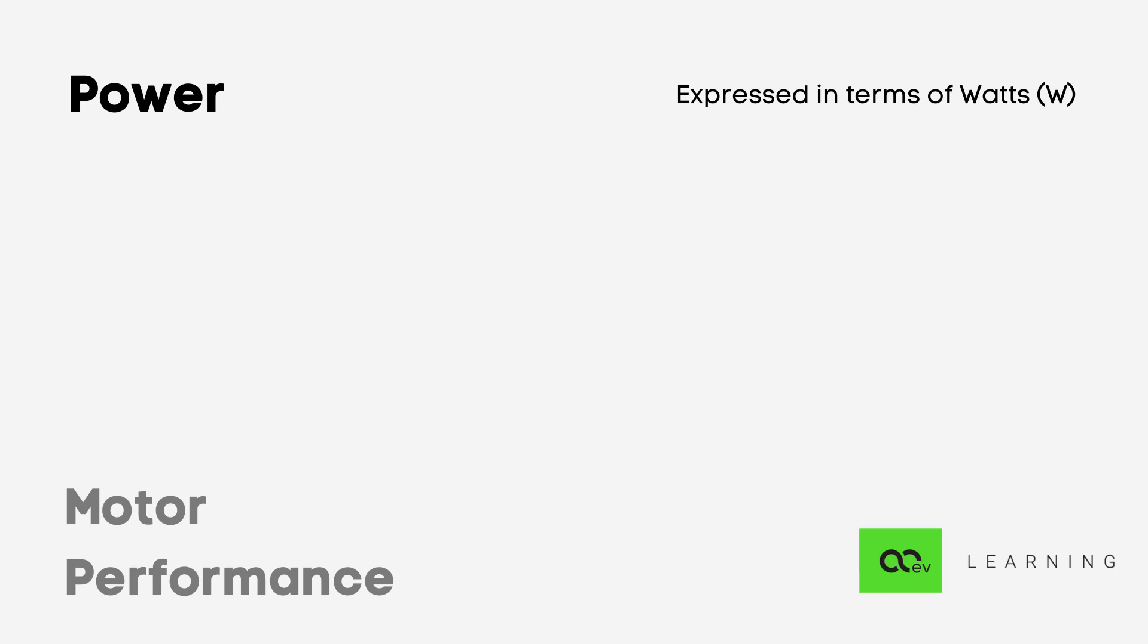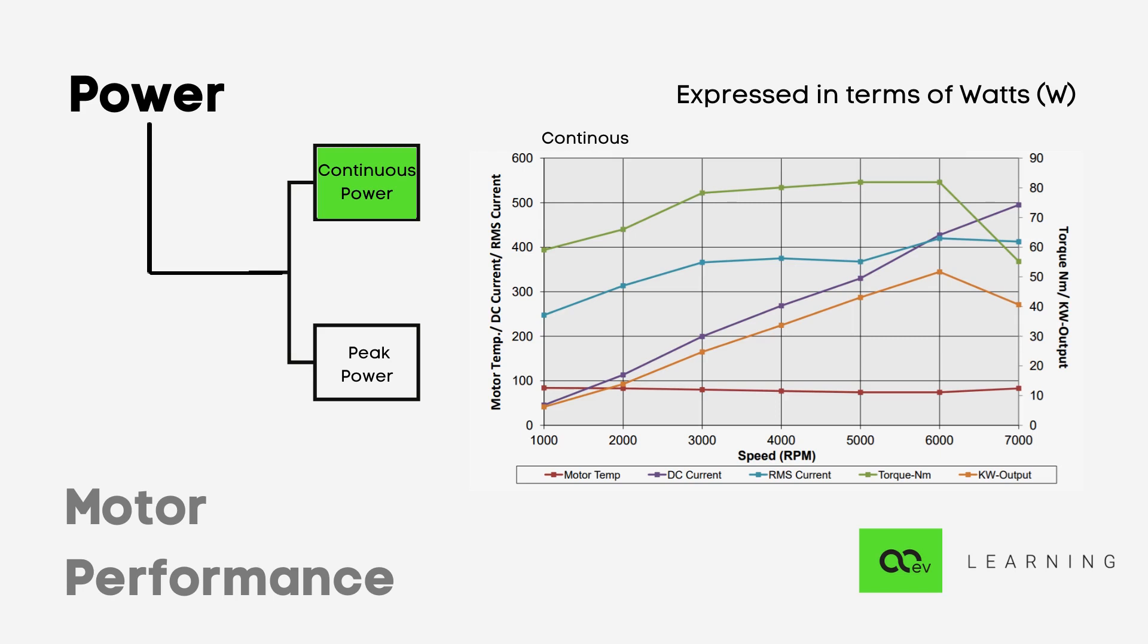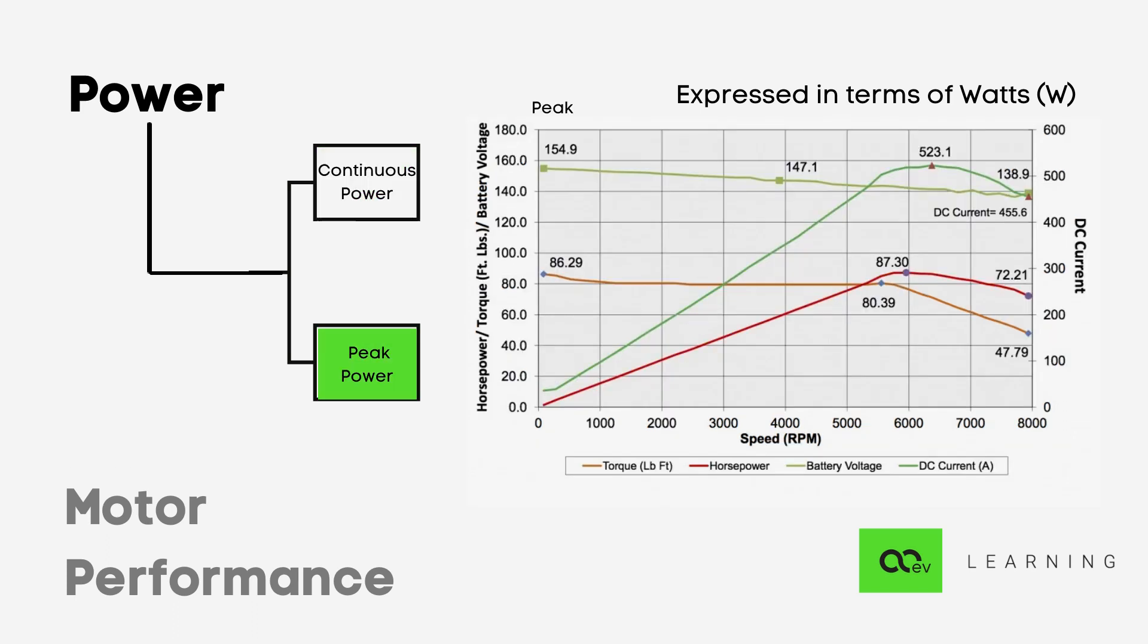If you go through the data sheet of a motor, you will see primarily two types of power ratings. The first will be continuous power, which is the power rating at which one can run the motor for theoretically infinite amount of time if the motor is for heavy duty 24 by 7 application. The second aspect will be peak power, the power which can be given to the motor only for a certain time duration. We generally see this in form of a graph plotted against the RPM.